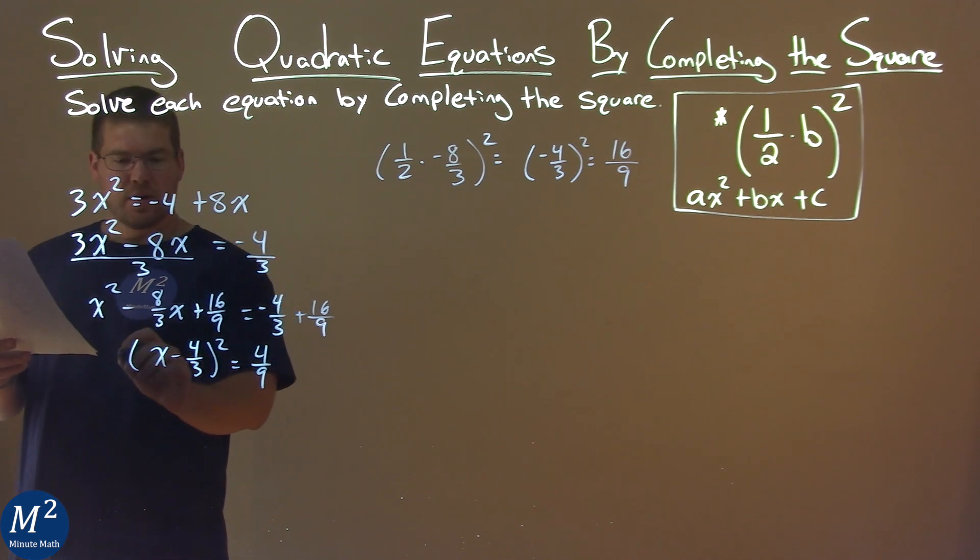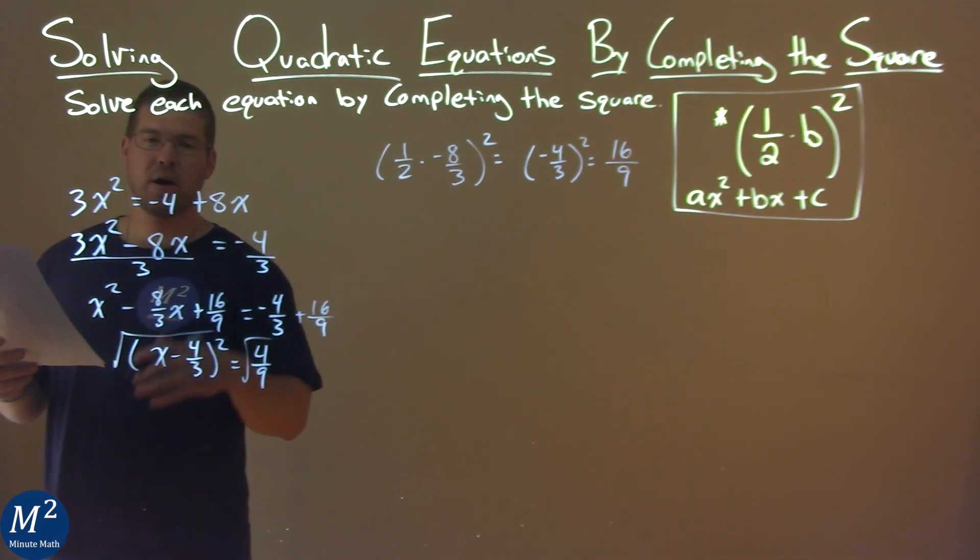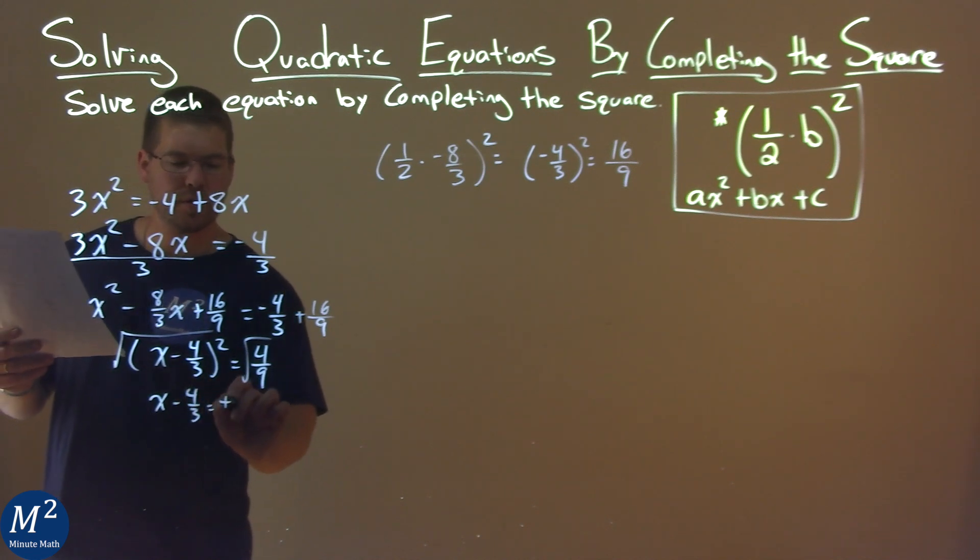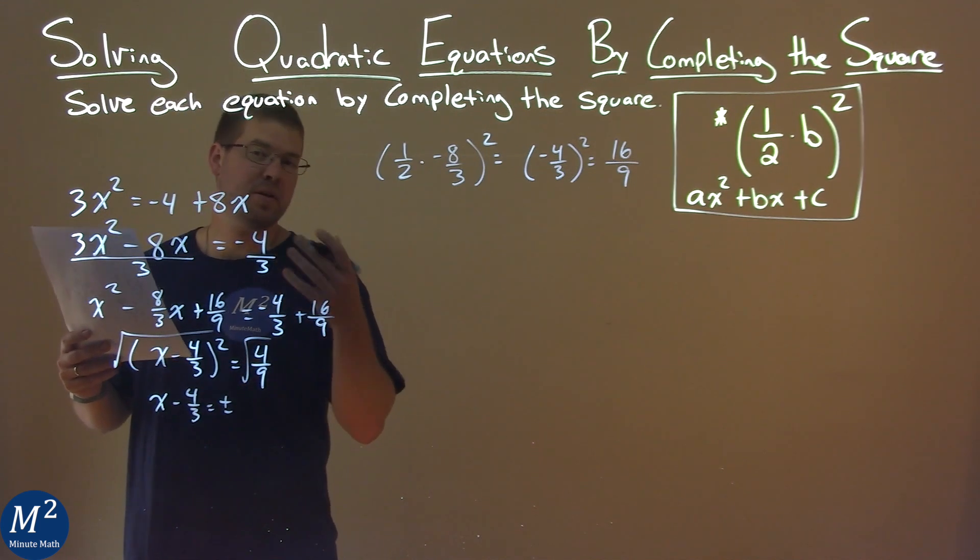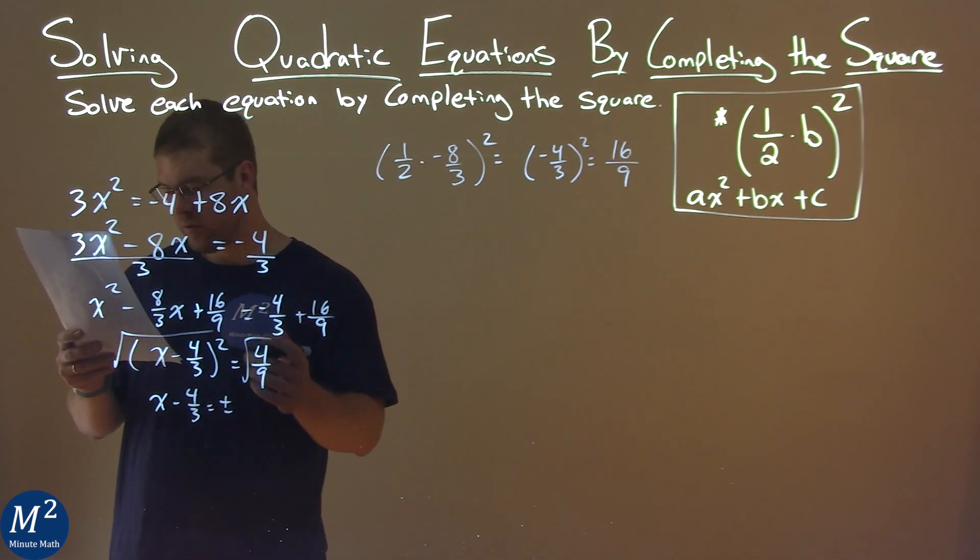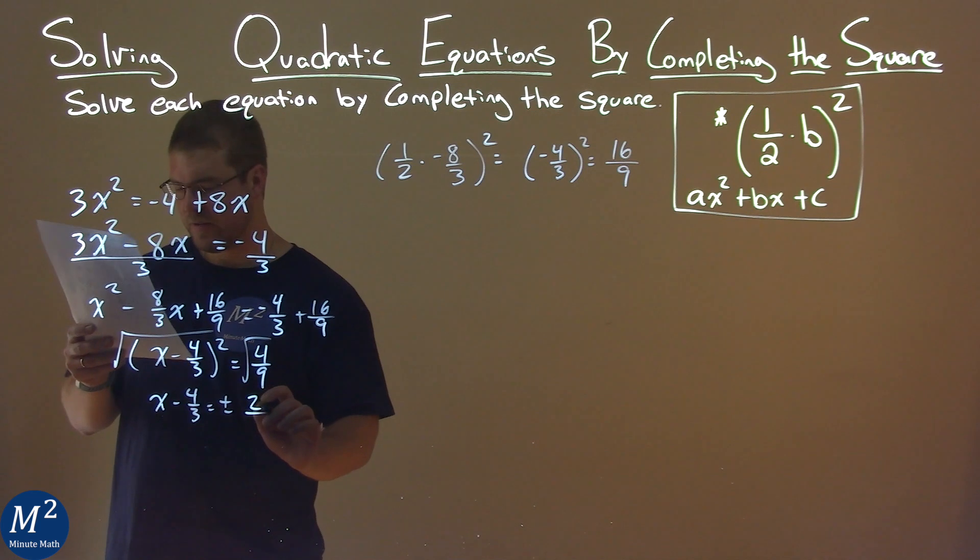We take the square root of both sides here, same process as before. x - 4/3 equals plus or minus. And the square root of 4/9, well, we can take the square root of the numerator and denominator individually. Square root of 4 is 2, and square root of 9 is 3.